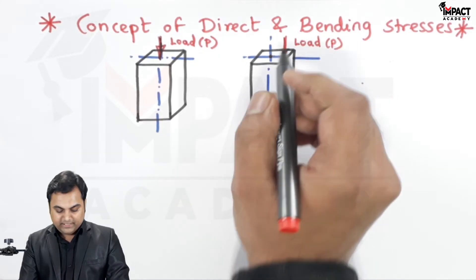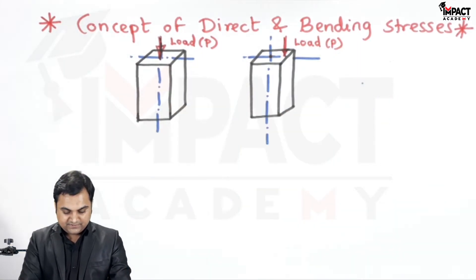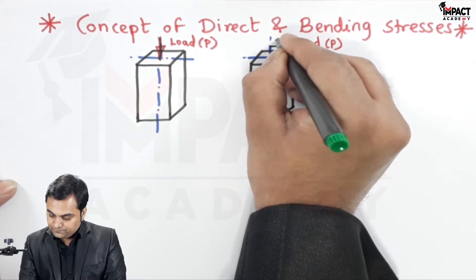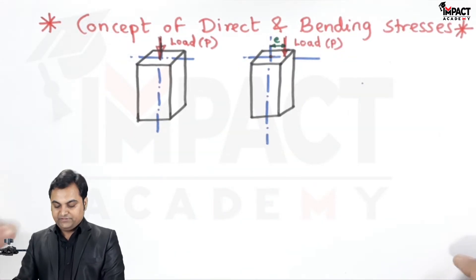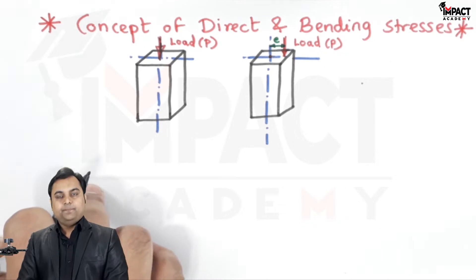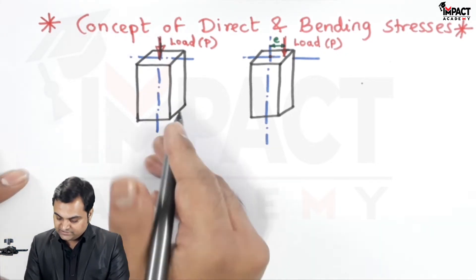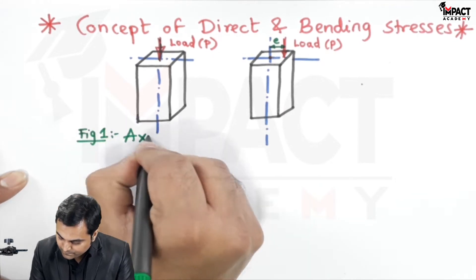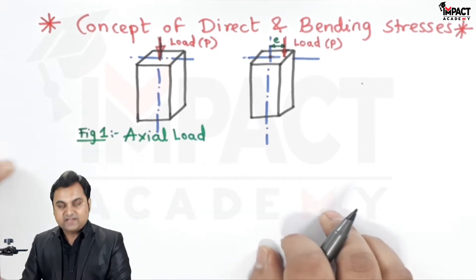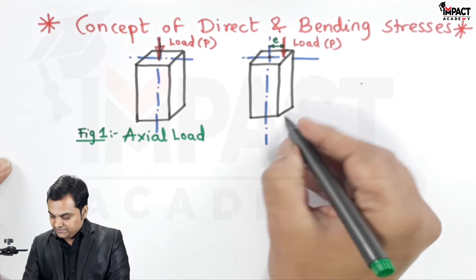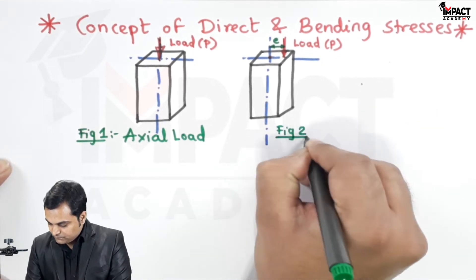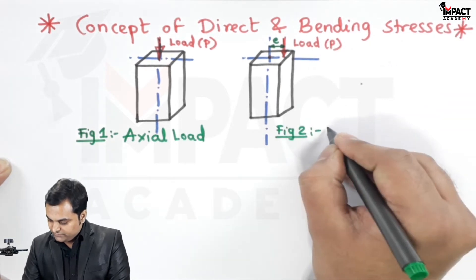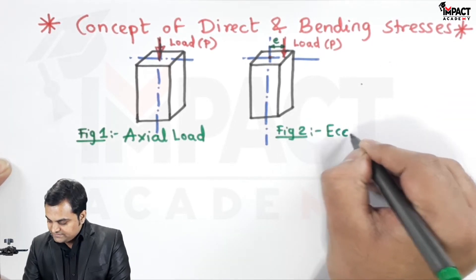The distance between the load and the axis is denoted by small 'e', called as eccentricity. In the first example, the load is passing through the axis, so it is called an axial load. Whereas in the second case, since the load is away from the axis, that is called an eccentric load.